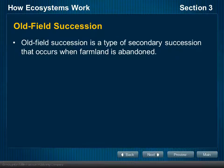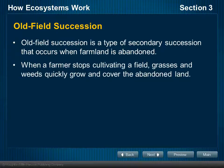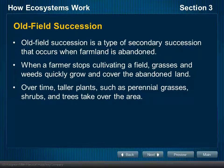One place we can look to see this play out is fields and what we call old field succession. Old field succession falls in the category of secondary succession, and it's what happens when farmland is abandoned — something constantly happening in our country because of its agricultural past. When farmland stops being cultivated, it starts to undergo succession and become something else. First, grasses and weeds grow up quickly and cover the abandoned land, but they are not the climax community. They make way for taller plants, perennial grasses, shrubs, and trees that take over the area.